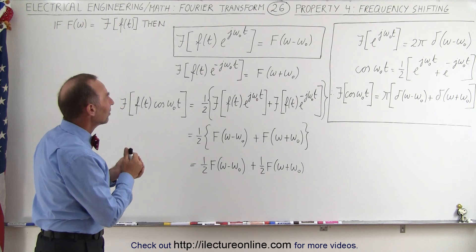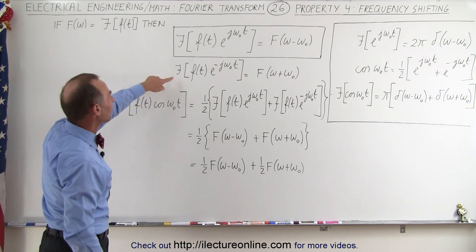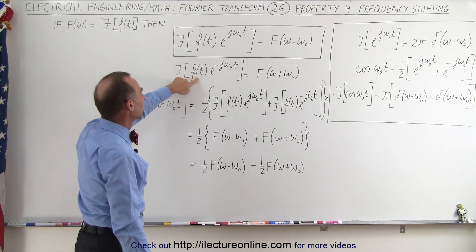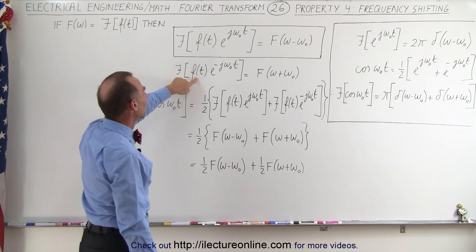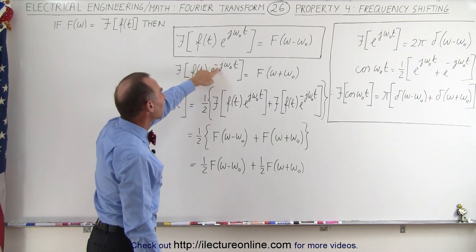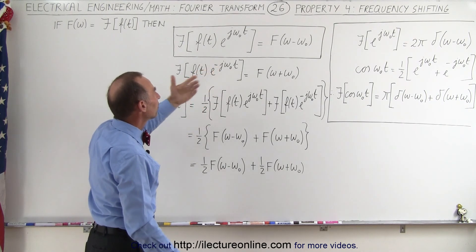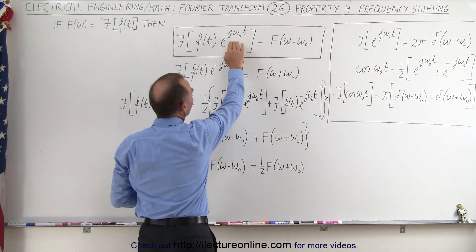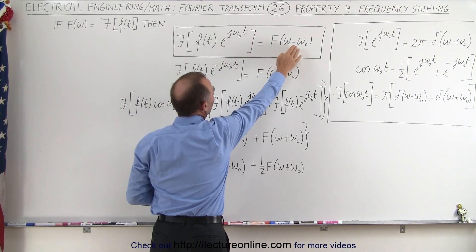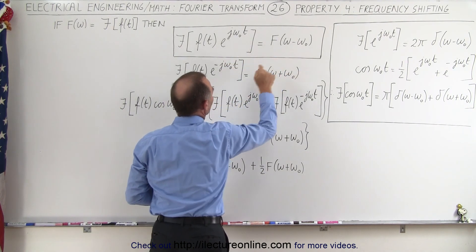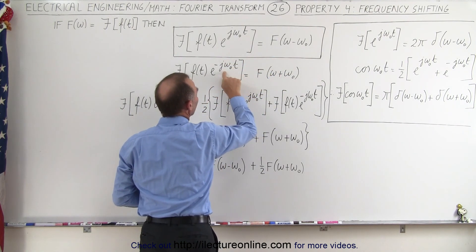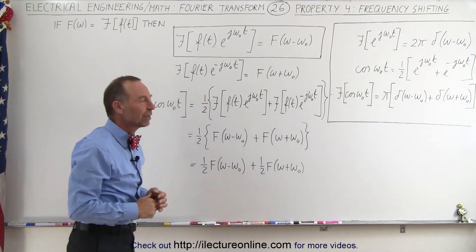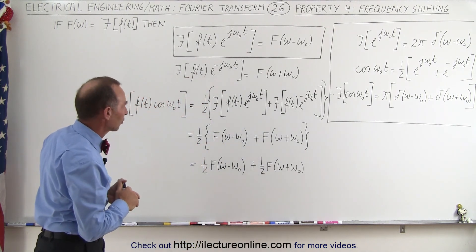Now let's say that we have the Fourier transform of some function in the time domain multiplied times e to the minus j omega t — we get a shift in the other direction. So if it's plus j omega t, it's a shift in the negative direction. If it's minus j omega t, it's a shift in the positive frequency direction.